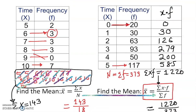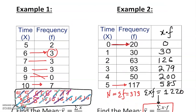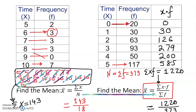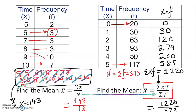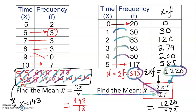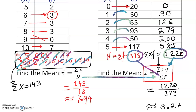To summarize: the first example gave a mean of approximately 7.94 and the second approximately 3.27. When you can extract the data easily, use the traditional method. When you can't, multiply each x by its frequency then add those products — that goes on top. Add all the frequencies — that goes on the bottom. That's how you find the mean from a frequency distribution table.